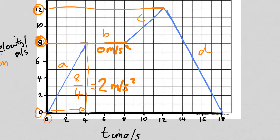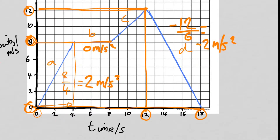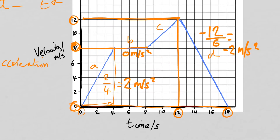For section D it's decelerating. The velocity started at twelve and finished at zero, so the change in velocity is minus twelve. It started decelerating at twelve seconds and finished at eighteen seconds, so it took six seconds. Minus twelve divided by six gives minus two meters per second squared. That minus sign means it's decelerating — it's slowing down by two meters per second every second.